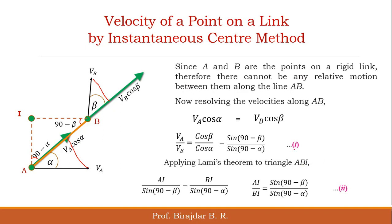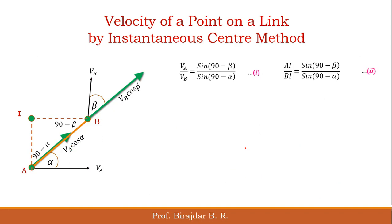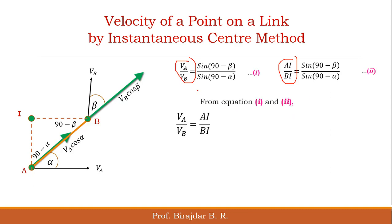Comparing Equation 1 and Equation 2, the right-hand sides of both equations are the same. Therefore we can equate the left-hand sides, giving us VA divided by VB equal to AI divided by BI.